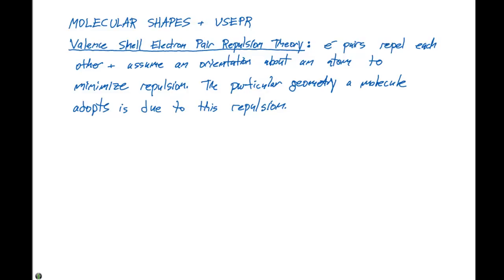The particular geometry a molecule adopts is due to this repulsion. We have to look at the lone pairs on a central atom and the bonding pairs. The greatest amount of repulsion is between two lone pairs. So lone pair-lone pair repulsion is greater than lone pair-bonding pair repulsion, which is greater than bonding pair-bonding pair repulsion.